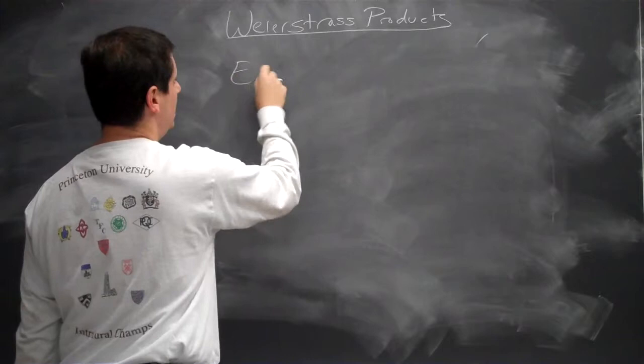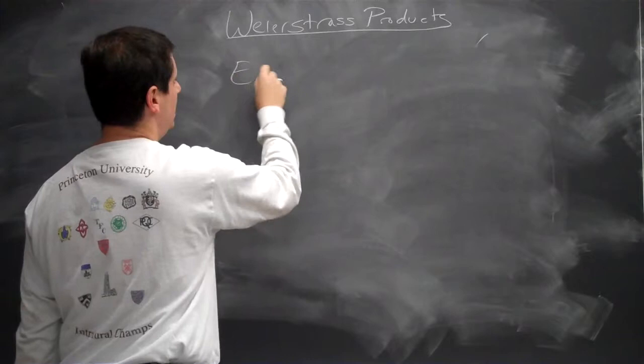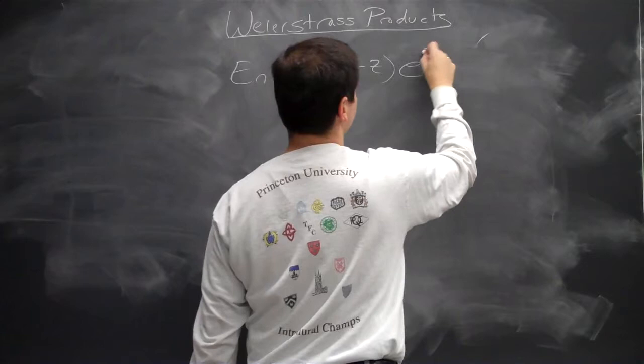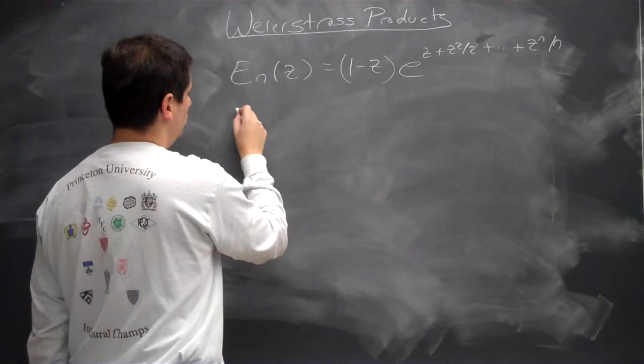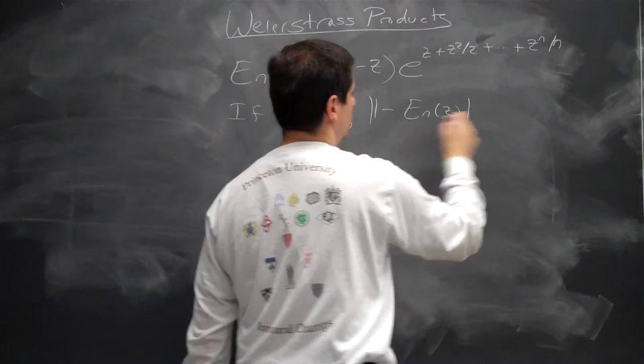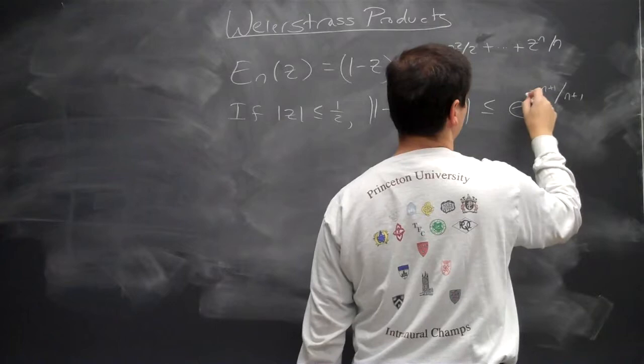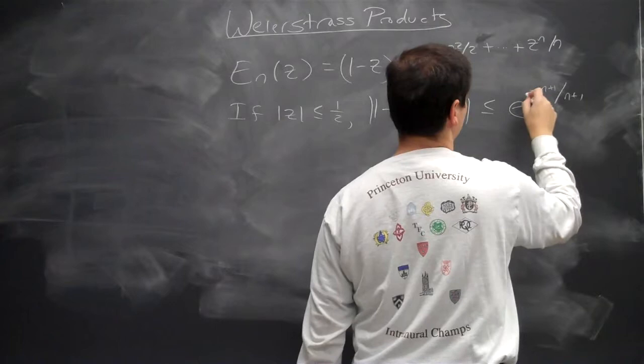So what we had was E_n(z) = (1 - z) · e^(z + z²/2 + ... + z^n/n). And we showed that if |z| < 3/2, then |1 - E_n(z)| ≤ e^(|z|^(n+1)) or something like that with a negative sign — we had something along those lines.